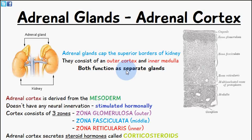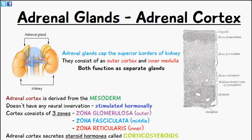Welcome to Five Minute School. In today's video we're going to be talking about the adrenal cortex of the adrenal glands. From the diagram on the left, we can see the adrenal glands are located on the superior borders of the kidney. We have two adrenal glands consisting of the adrenal cortex and the adrenal medulla.